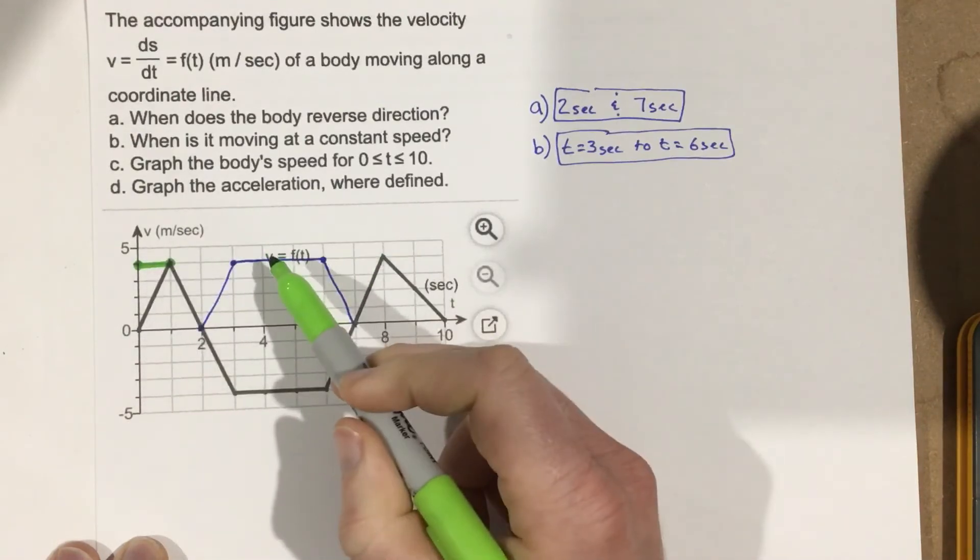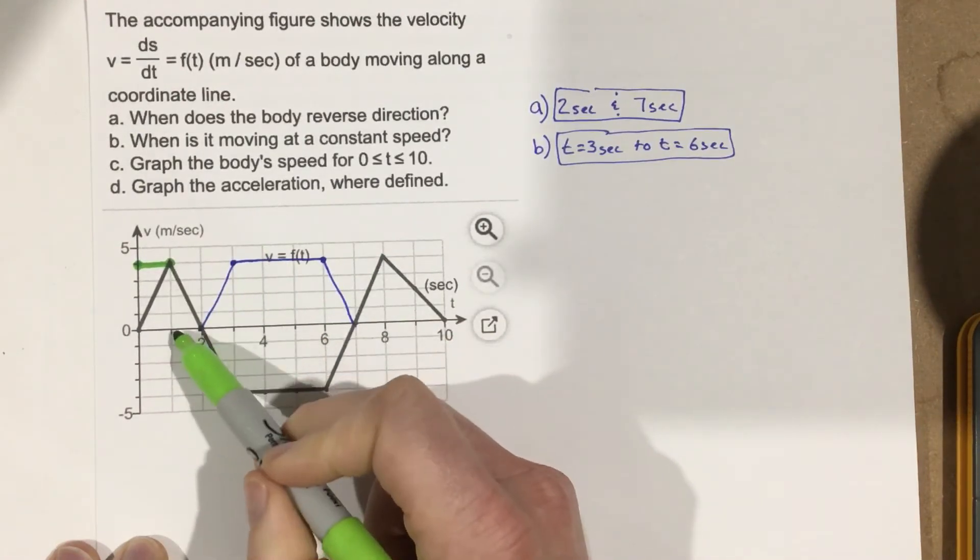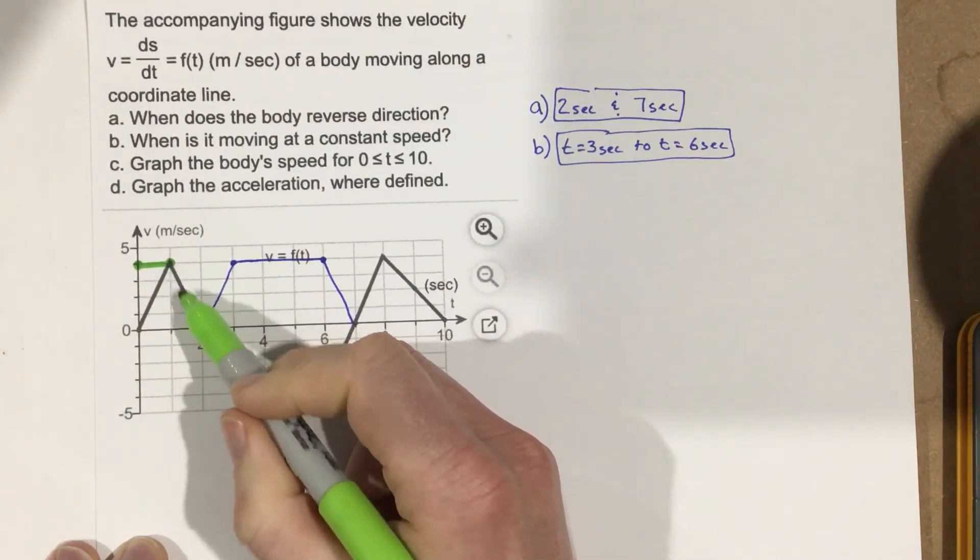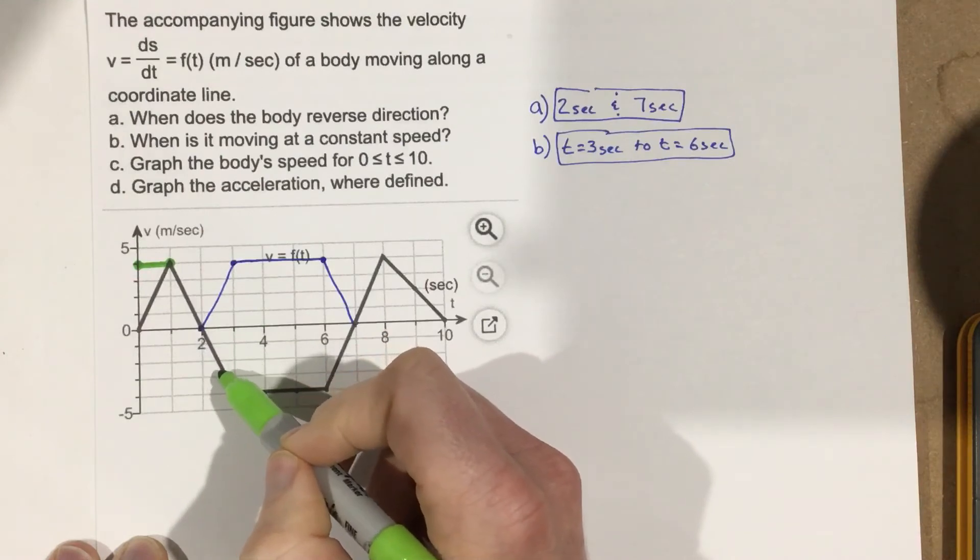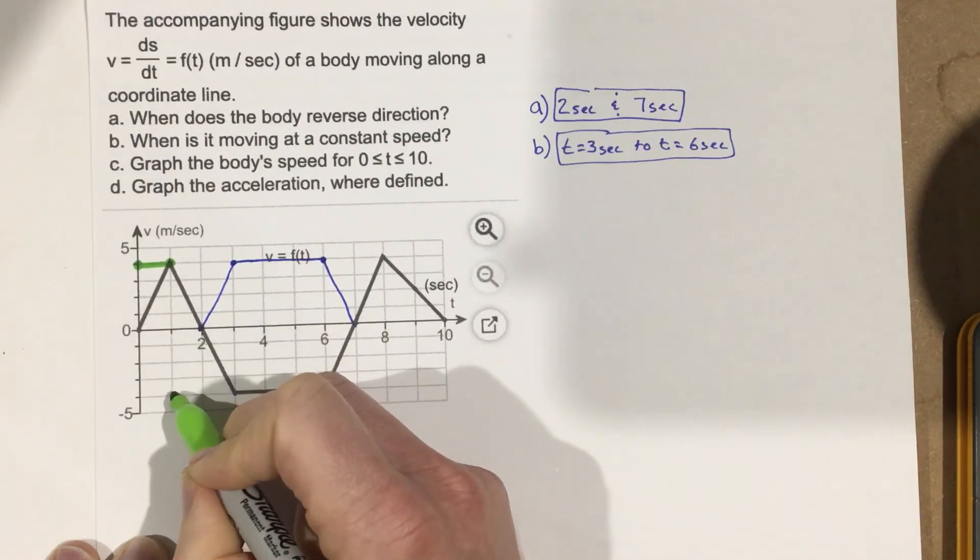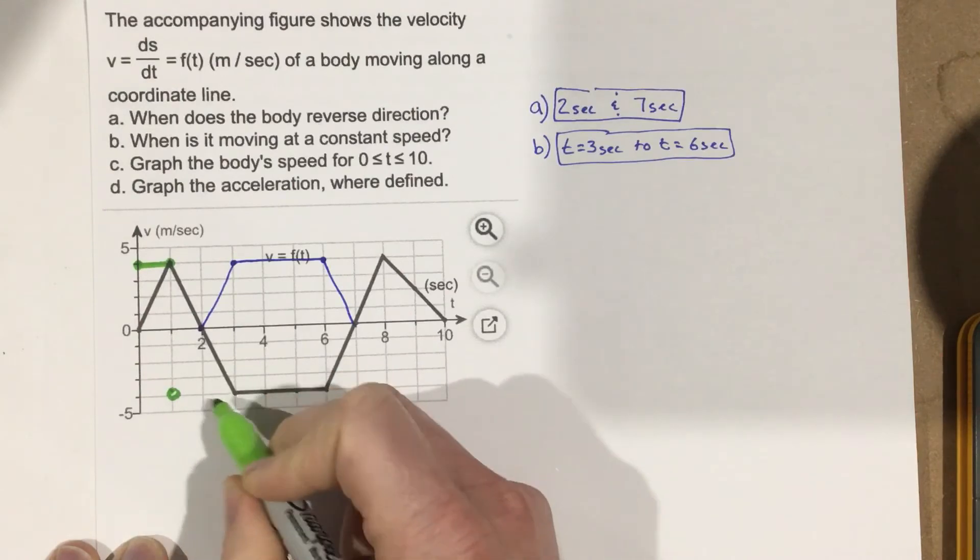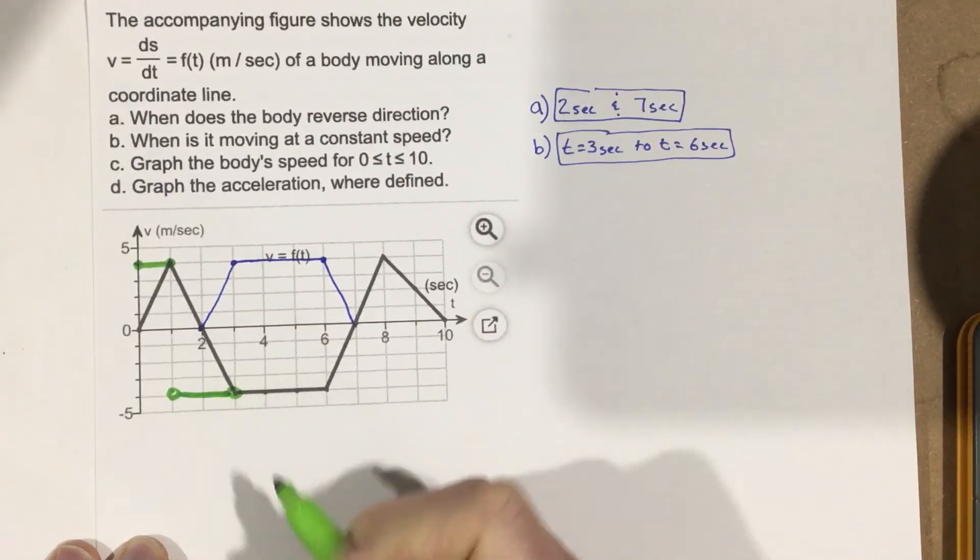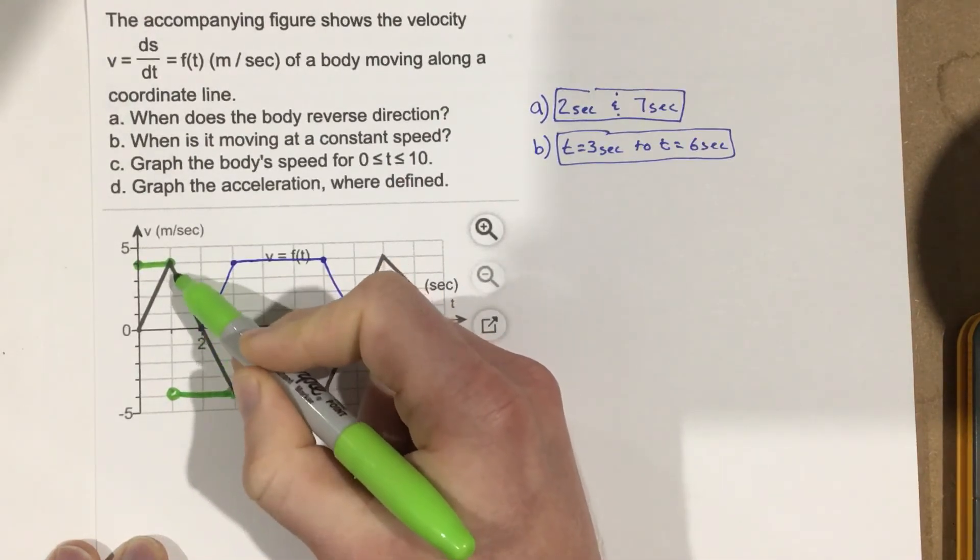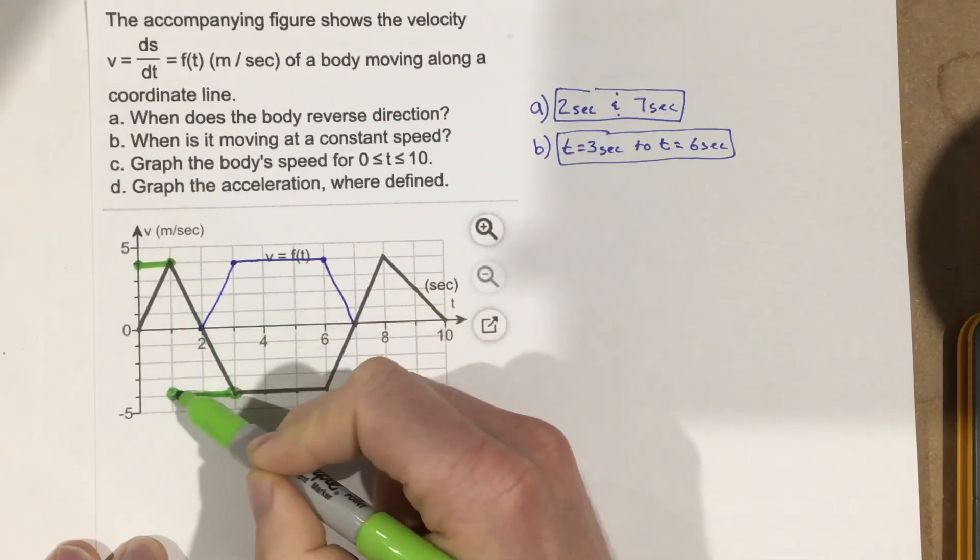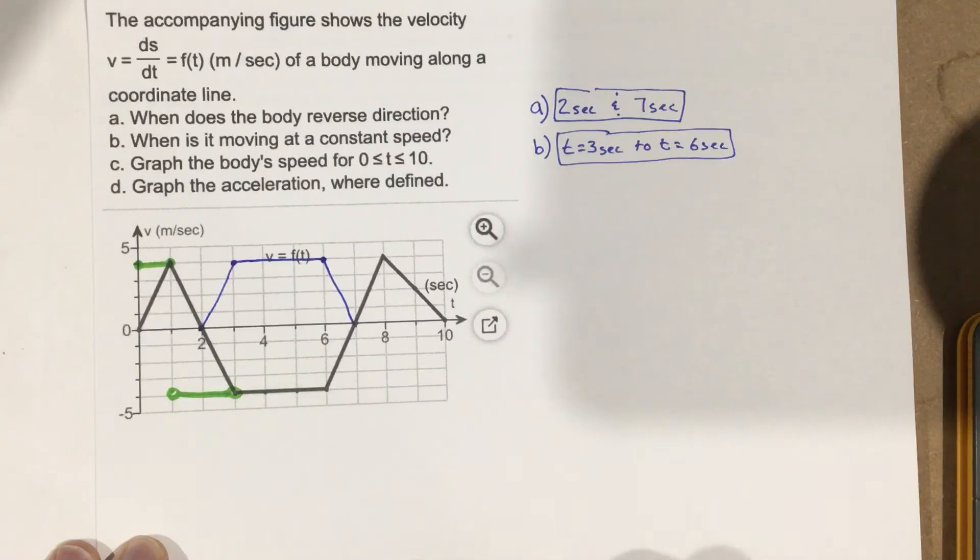The acceleration here is actually going down because we're slowing down during this time, so my acceleration here is negative. I'm going to say that it's going from open dot to open dot here, and this would be at negative 4. I know that's the case because we have the same slope, just opposite slope. We're going down 4 over 1, down 4 over 1, so that means my acceleration is at negative 4.